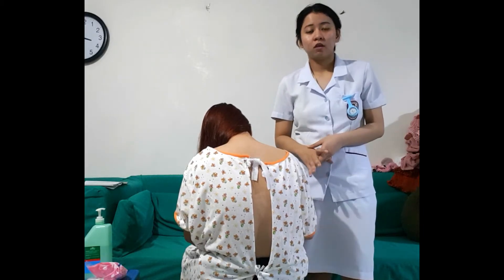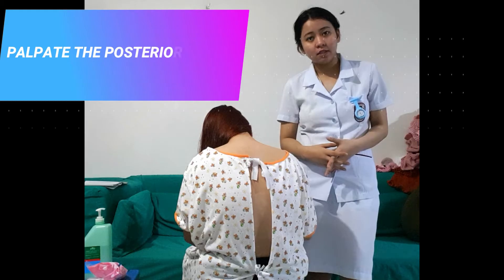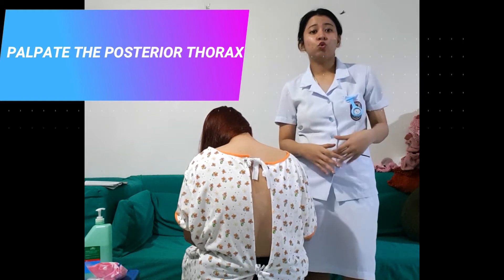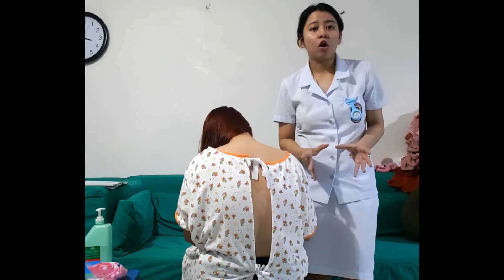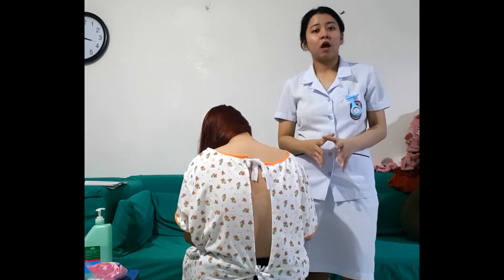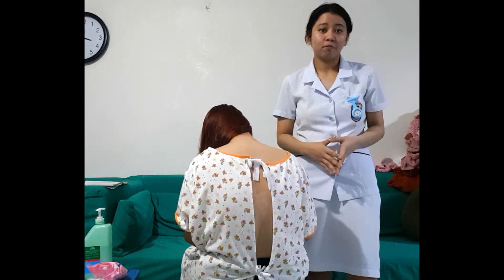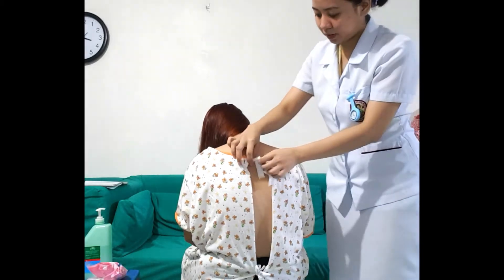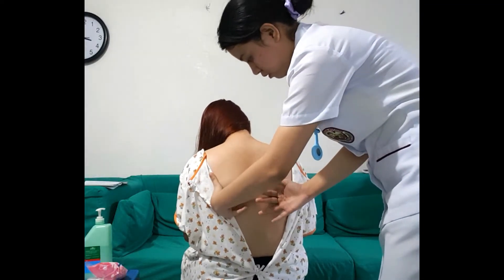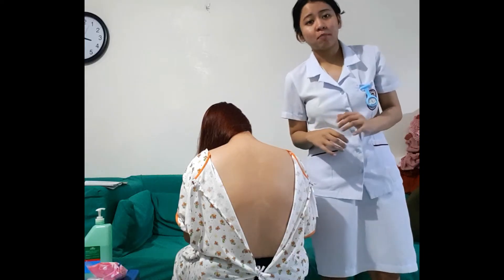Now we will palpate the posterior thorax. For clients with no respiratory complaints, we definitely assess the skin temperature as well as the integrity of all chest skin. For clients who do have respiratory complaints, we palpate all chest areas for bulges, tenderness, and abnormal movements, and avoid deep palpation for painful areas, especially if a fractured rib is suspected. The client has a uniform temperature, which is balanced and normal.